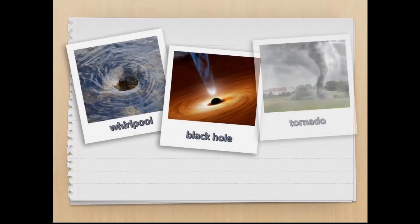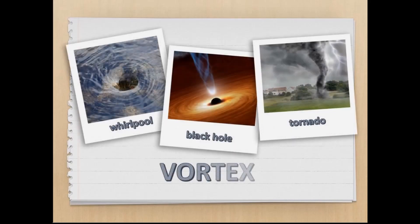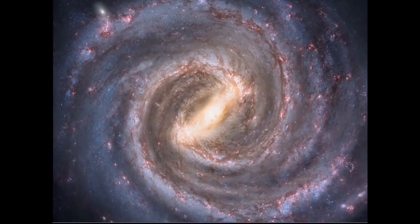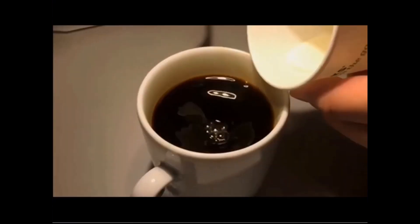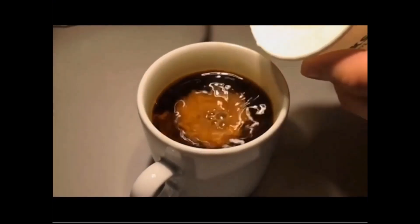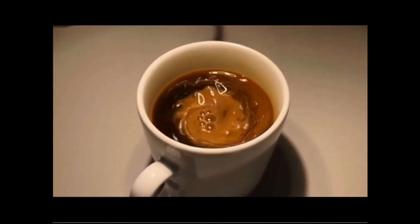What do a water whirlpool, a black hole and a tornado have in common? A particular shape called vortex. From galaxies to stirring milk into coffee, vortex appear everywhere in nature.